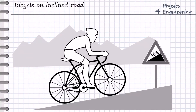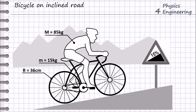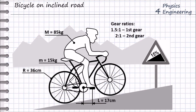Today we have a task: a cyclist on an inclined road. The cyclist has a mass of 85 kg and the bike has a mass of 15 kg. The radius of the wheel is 36 cm and the lever arm of the pedal is 17 cm. The question is: can the cyclist run on a hill with 15% inclination? We also consider that the bicycle has 2 gears with 1.5 and 2 gear ratios.